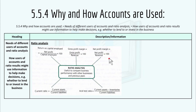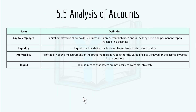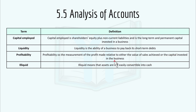Here's a recap of all ratio analysis equations. Profitability ratios: Return on Capital Employed, Gross Profit Margin, and Net Profit Margin. Liquidity ratios: Current Ratio and Acid-Test Ratio. Key definitions: Capital Employed is shareholders' equity plus loan and non-current liabilities — the long-term and permanent capital invested in the business. Liquidity is the ability of a business to pay back its short-term debt. Profitability is the measurement of profit made relative to either the value of sales achieved or the capital invested in the business. Illiquid means assets are not easily convertible to cash.